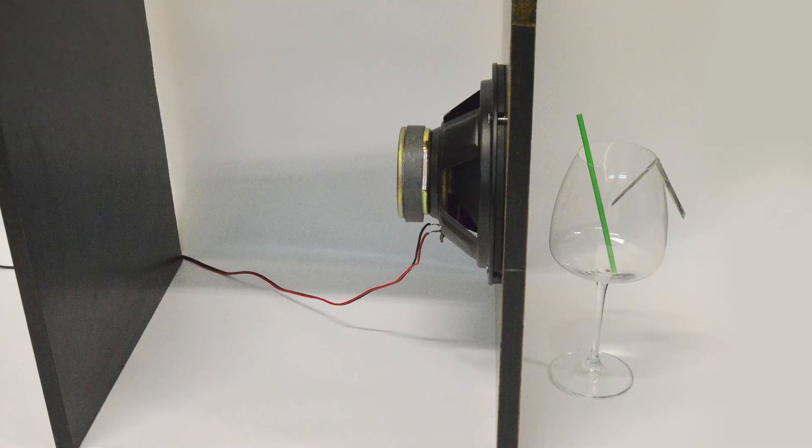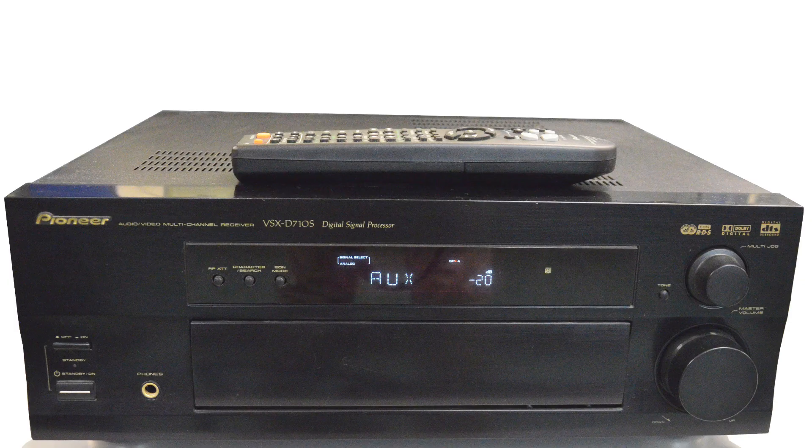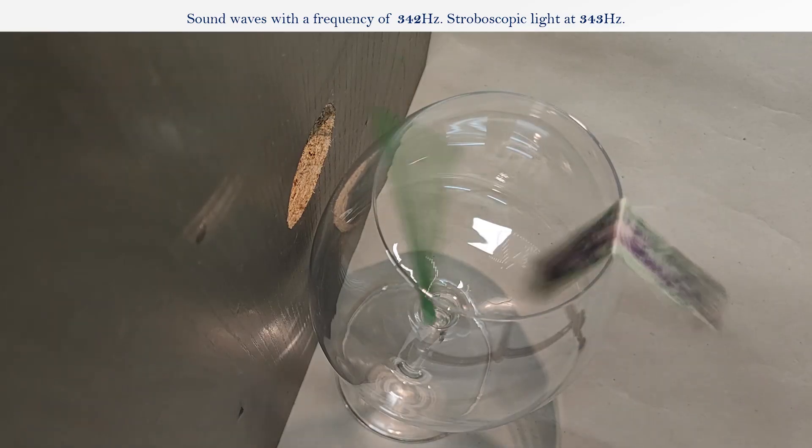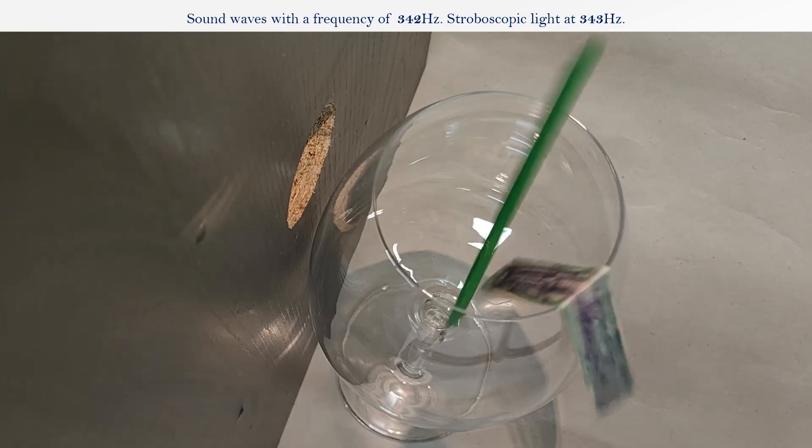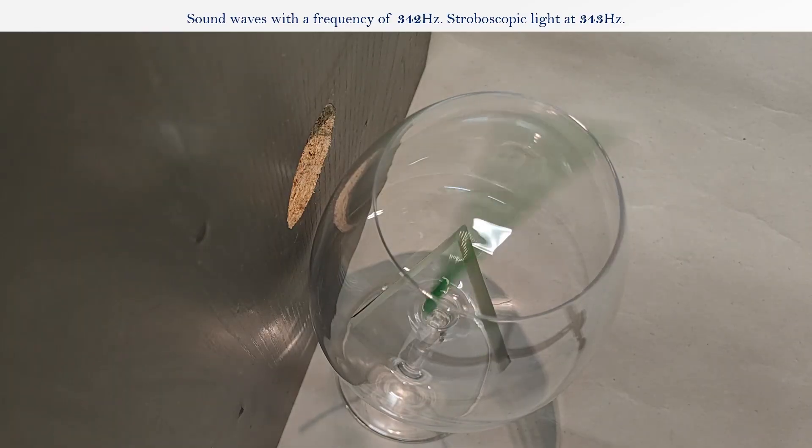The glass is stimulated using a loudspeaker and an audio power amplifier. Stroboscopic lighting is used to show the rapid vibrations of the glass in apparent slow motion.